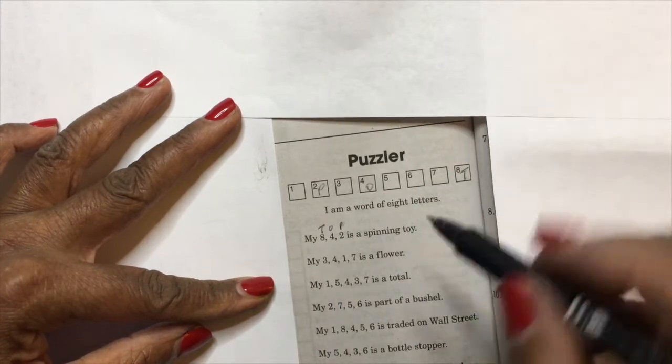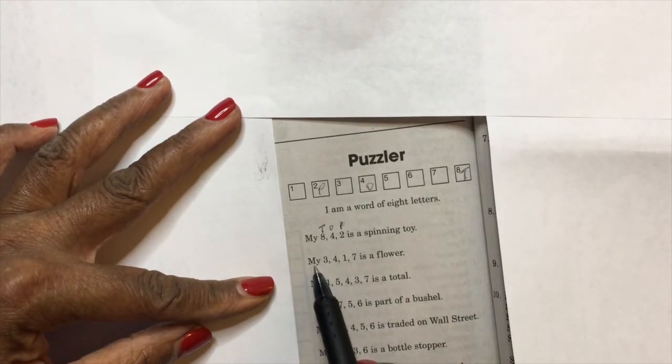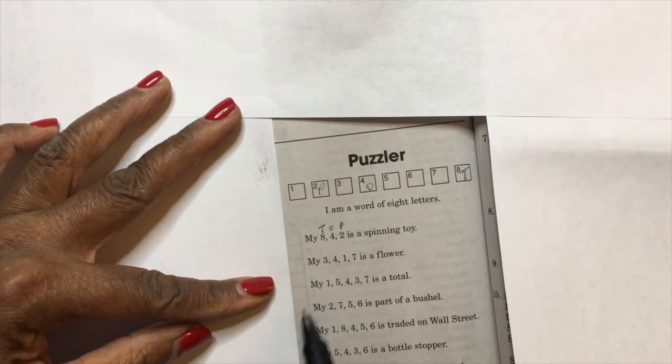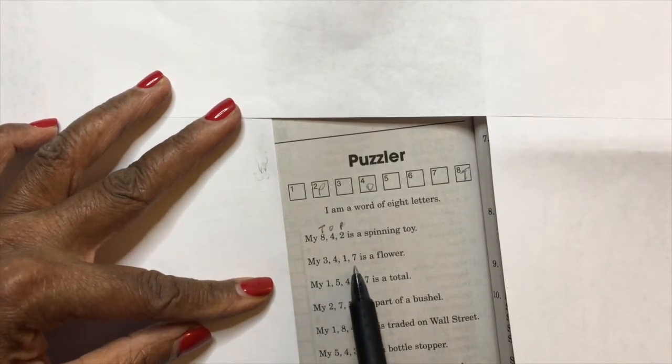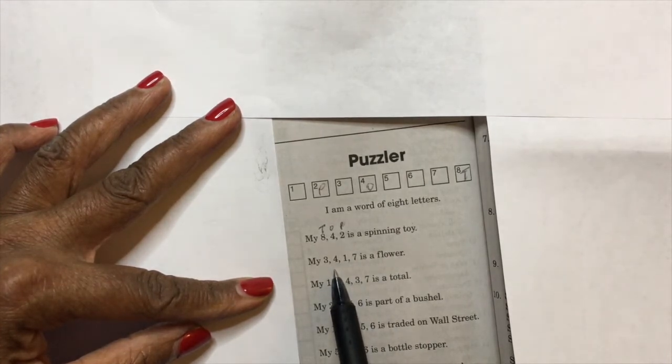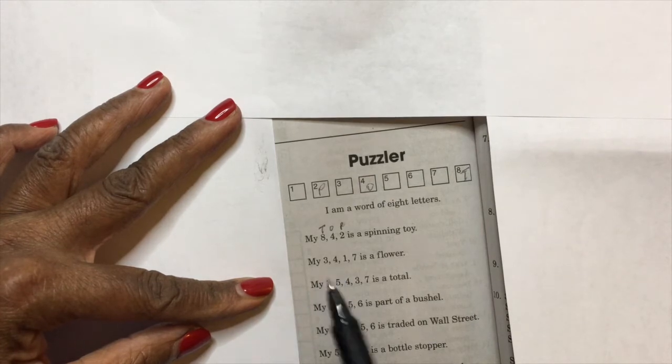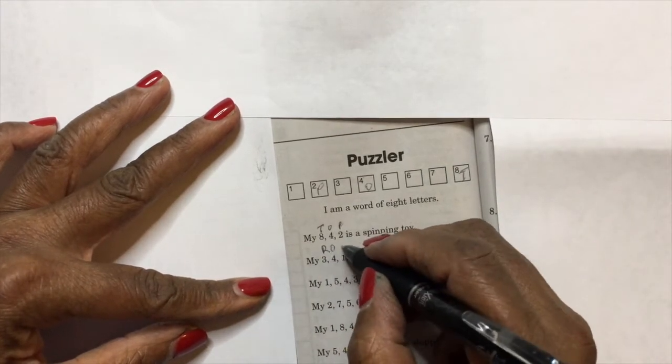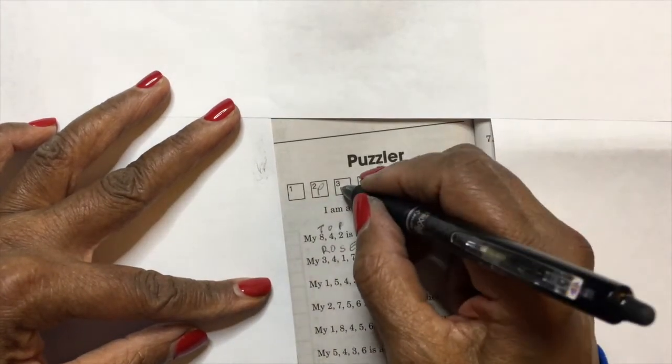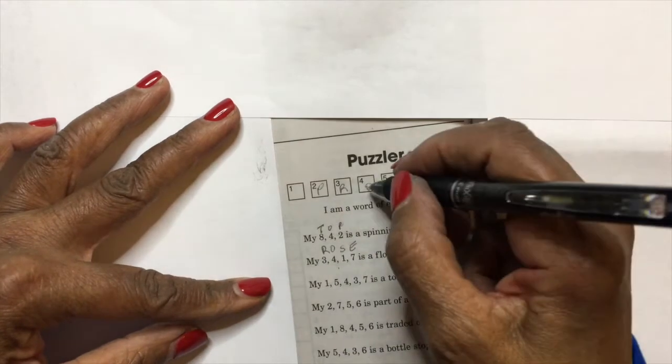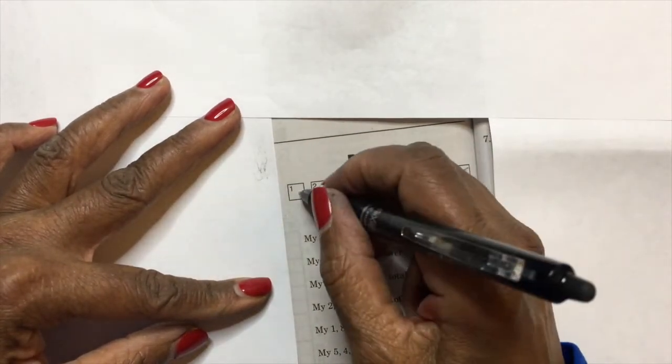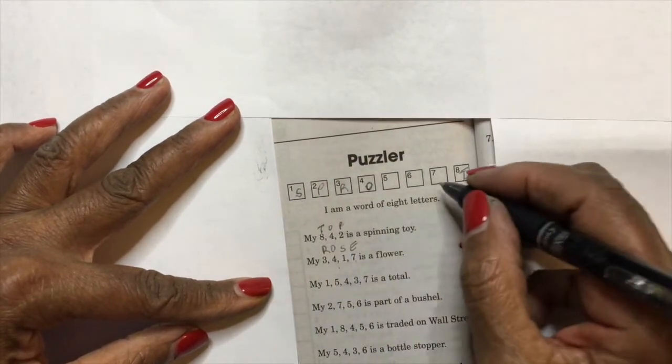but we'll just keep going. Second clue: 'my three, four, one, and seven is a flower.' So a four-letter word that is a flower. Well, it could be 'rose.' Let's see, that's the first thing that came to my mind. Well, let's try it. That means three would be an R, four would be an O—okay, so that's promising. I already have O as four. One would be an S, and seven would be an E.